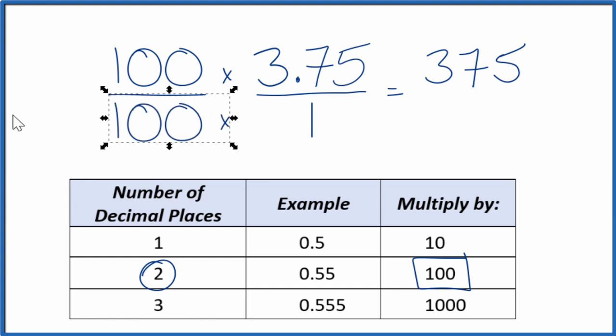Think of it this way. 100 divided by 100, that's just 1. So we're multiplying by 1, and we're not changing the value, just the way it's written. 100 times 1, that equals 100. And now we have our fraction, 375 over 100.